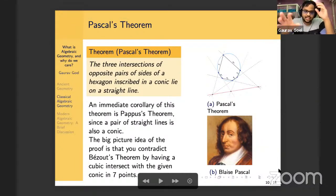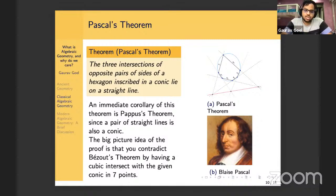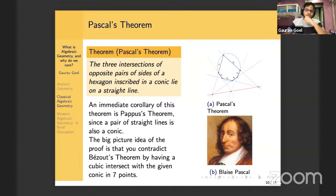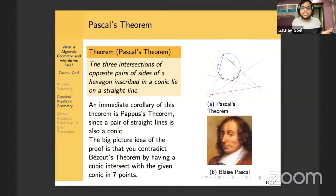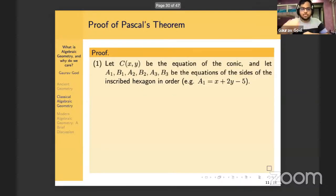Before I give you the proof, I want to give you a big-picture idea of how it goes. The basic idea is that you contradict Bézout's theorem by having a cubic intersect with the given conic in seven points. The way you contradict the theorem is by contradicting its hypotheses — which asks that the two curves don't share a common component. So let's see how the proof goes.